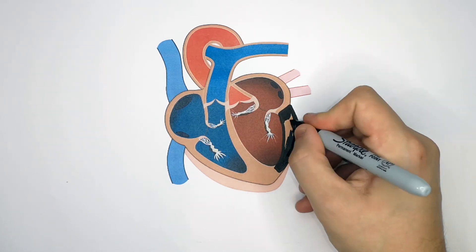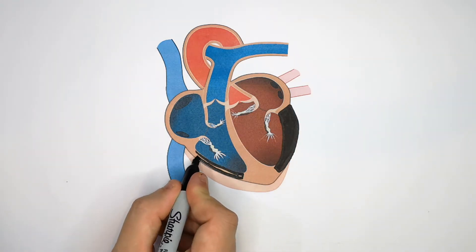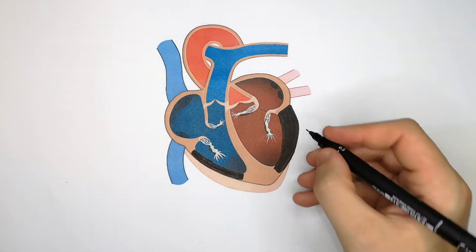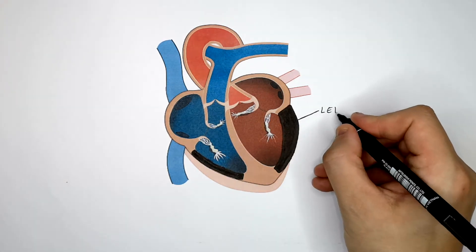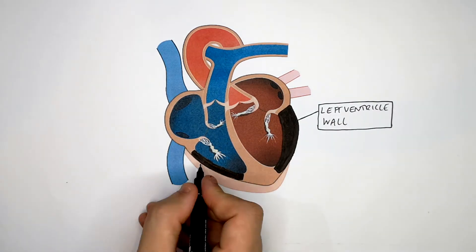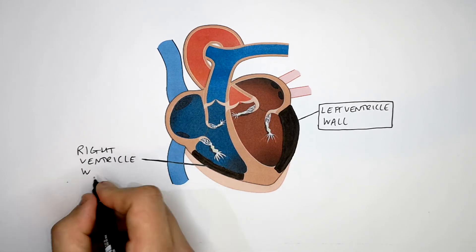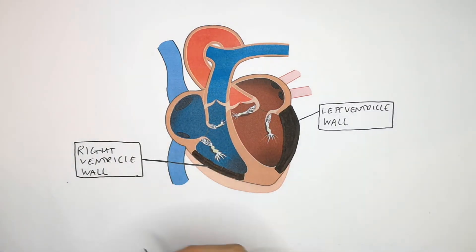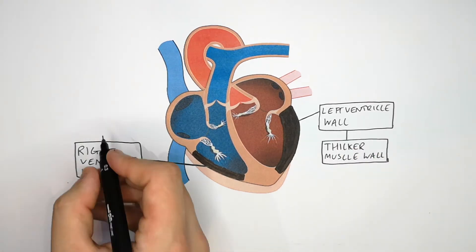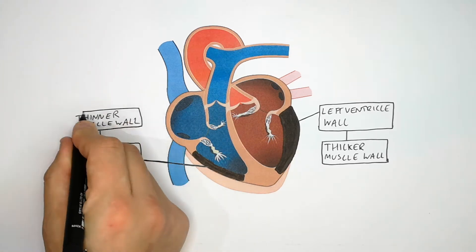The left ventricle is much thicker than the right ventricle, which has a much thinner muscle wall. There is a difference in width between the muscle walls of the ventricles. This is the thicker left ventricle wall of the heart, and this here is the thinner right ventricle muscle wall of the heart.